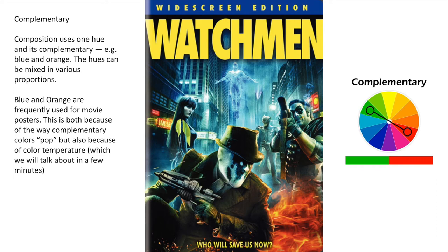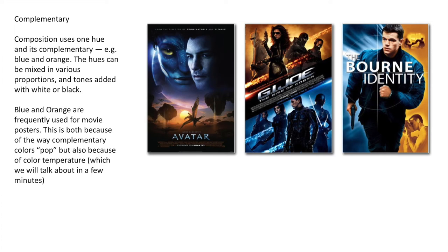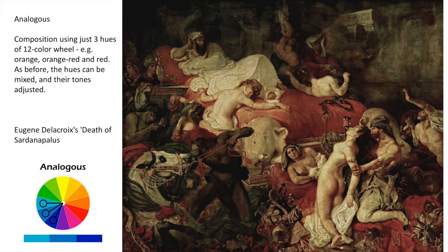Complementary colors are opposite each other on the color wheel. These hues can be mixed in various proportions. Blue and orange are frequently used for movie posters because complementary colors pop visually, and also because of the color temperature difference, which we'll talk about in a few minutes. It's mind-boggling — almost every action movie poster is mostly orange and blue. Analogous color uses three hues adjacent on a 12-color wheel — for example, orange, orange-red, and red. Here you have Delacroix's Death of Sardanapalus, which is almost entirely analogous colors.